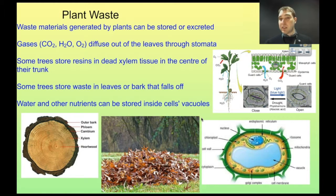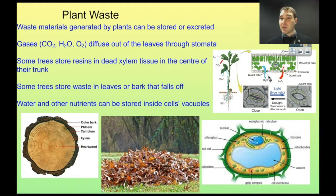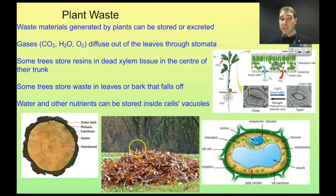Now we need to talk about plant waste. Plants, like all organisms, produce waste products from their cellular processes. Plants can either store the waste products or excrete them. Waste gases such as carbon dioxide, water, and oxygen diffuse out of the leaves through stomata. Plants can produce excess water through transpiration and also through respiration of cells, so water vapor can leave through the stomata. Oxygen is a byproduct of photosynthesis, so it can pass through too. Carbon dioxide comes in through stomata but is also leaving through stomata due to respiration. Resins and other compounds can be stored in dead xylem tissue in the center of the trunk. Some trees store waste in leaves or bark, and when those fall off, that gets rid of the waste. Water and other nutrients can be stored inside the large central vacuoles of plant cells, which is good for storing water, salts, and sugars so the plant can use them when there isn't as much around.